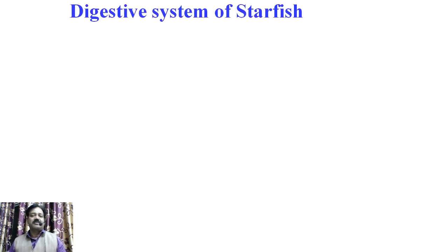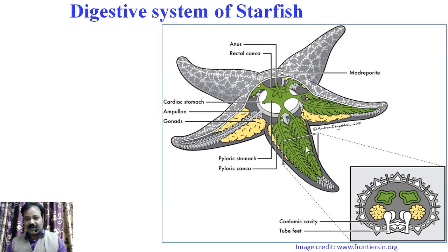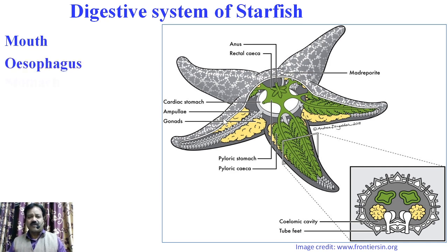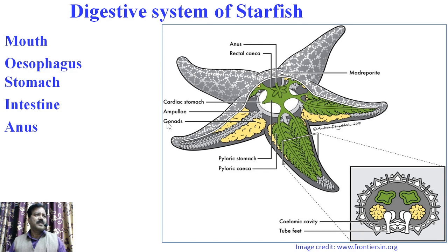The next part of this video is the digestive system of starfish. This is the schematic representation diagram of the digestive system of starfish. The digestive system consists of the alimentary canal as well as associated digestive glands. The alimentary canal consists of the following parts: mouth, oesophagus, stomach, intestine, and anus. The mouth is present in the center of the peristomial membrane of the oral surface. It is provided with sphincter muscles capable of great extension and contraction. Mouth leads into the oesophagus.